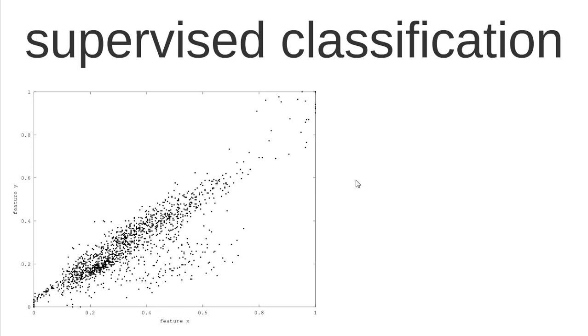When we display features on the screen, we combine two of them because it's easier to show. We have here an example of feature X and feature Y, and combining these two features we get what we call the feature space.